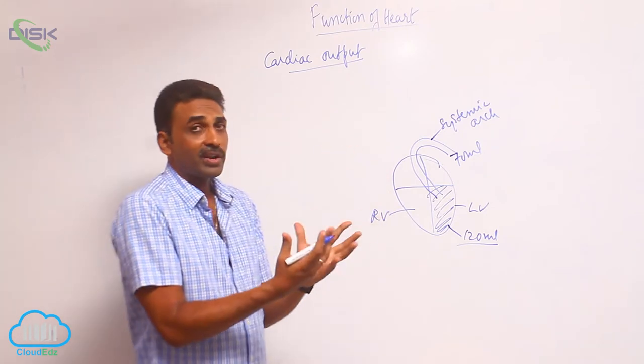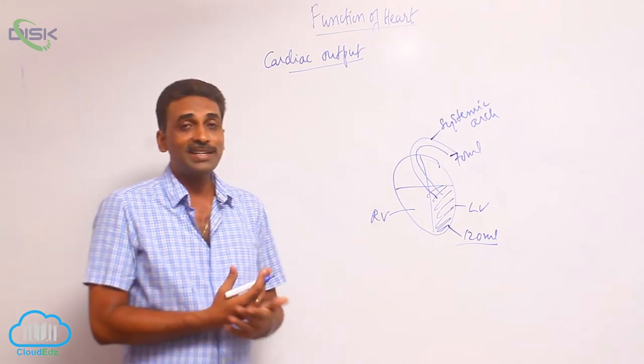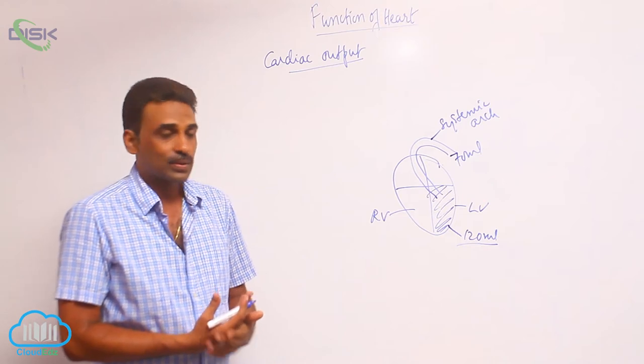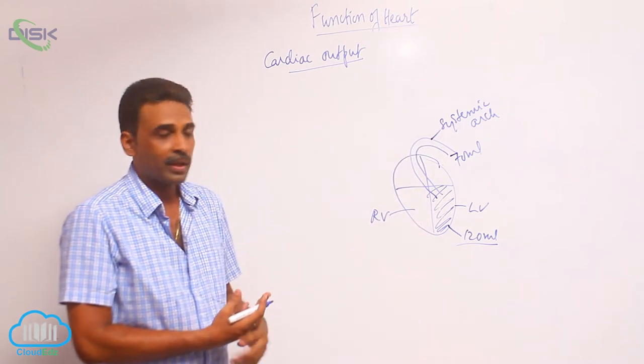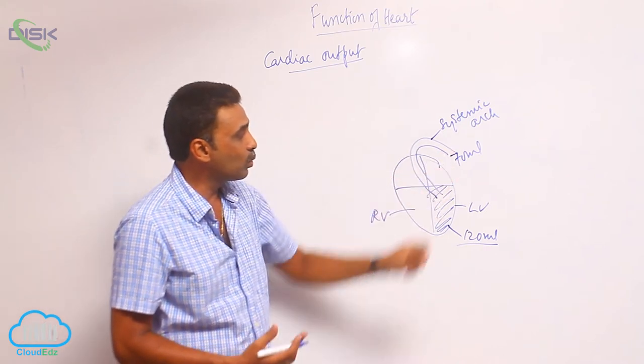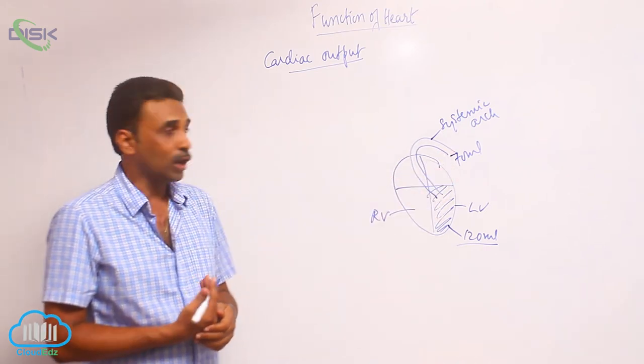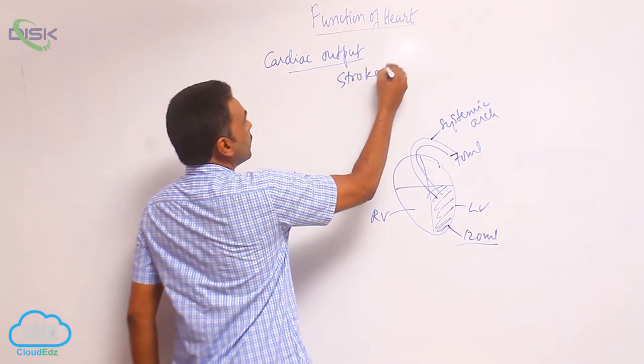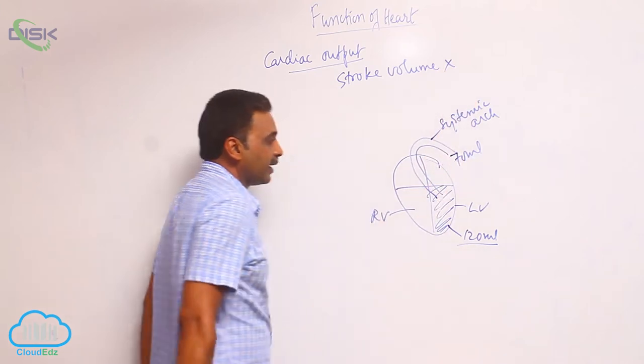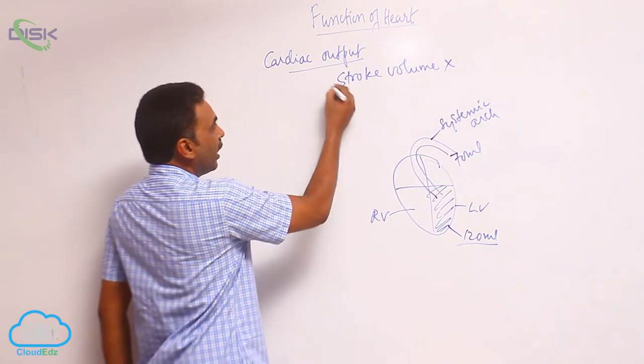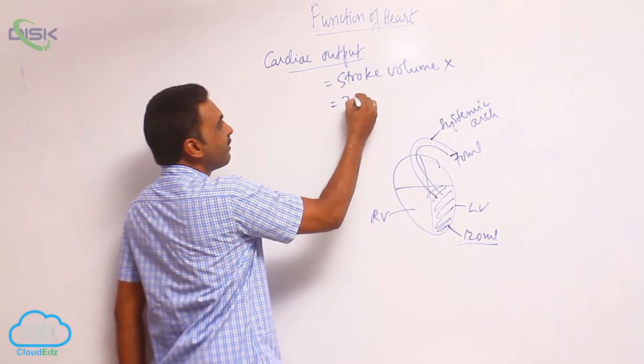That means during ventricular systole, the total amount of blood is not pushed outside. Some amount is pushed outside, some amount is left behind. Whichever amount which is going outside is called stroke volume, and normal stroke volume is 70 ml.